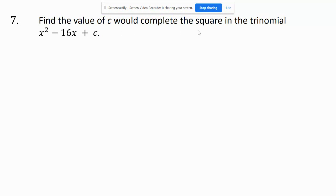Find the value of c that would complete the square in the trinomial x² - 16x + c. There's not an a term, so all I have to do is look at this -16 and divide it by 2. When you complete the square, you're looking for a number that doubled makes this, and squared makes the c.